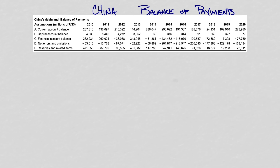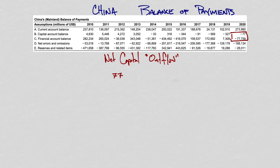Since we're looking at net capital inflows or outflows, let's also calculate a net capital outflow for thoroughness. Let's pick 2020, the most recent year in this data set. The net capital inflow or outflow: we take $77,000 and also the other number, $759,000, and combine these two together to get a net capital outflow of minus $77,836. It's an outflow because we have that negative number.